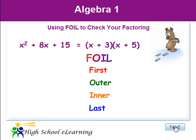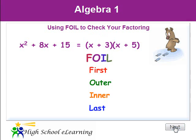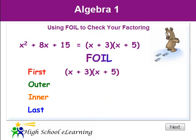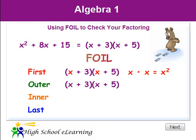Let's try it. Multiply the first terms of the binomials: x times x equals x squared. Multiply the outer terms of the binomials: x times 5 equals 5x.